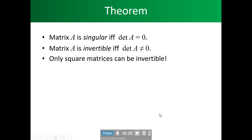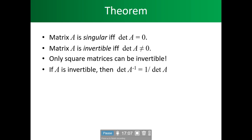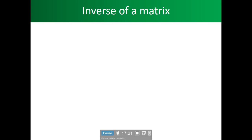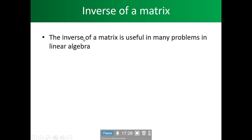We have some definitions to go over. Matrix A is singular if and only if det(A) equals zero. A matrix is invertible if and only if det(A) does not equal zero — because you can't divide by zero. We only use square matrices that can be invertible. If A is invertible, then the determinant of the inverse of A equals 1 over the determinant of A. The inverse of a matrix is useful in many problems in linear algebra.